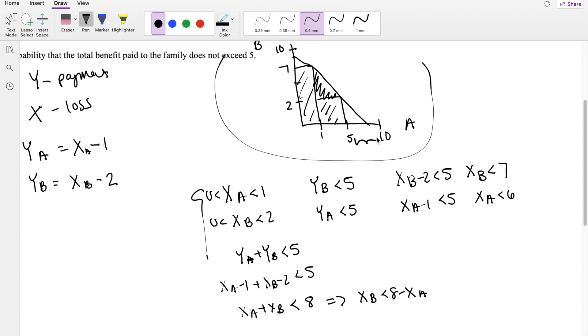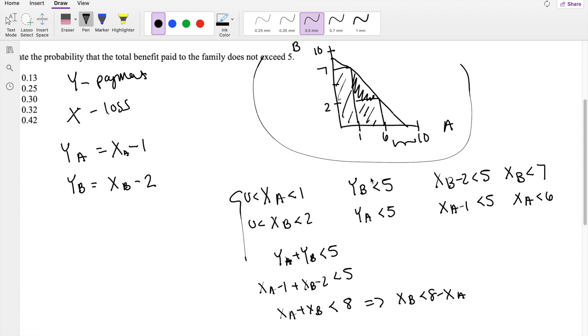And you might be wondering, how come you don't fill in this little triangle right here if X_B is less than 8 minus X_A? And that's because, this should be 6 by the way. Because if there's losses bigger than 6, like let's say 7, the maximum amount, because if there's losses here bigger than 6, then the company is not going to, that payment will definitely be bigger than 5. Think about it.